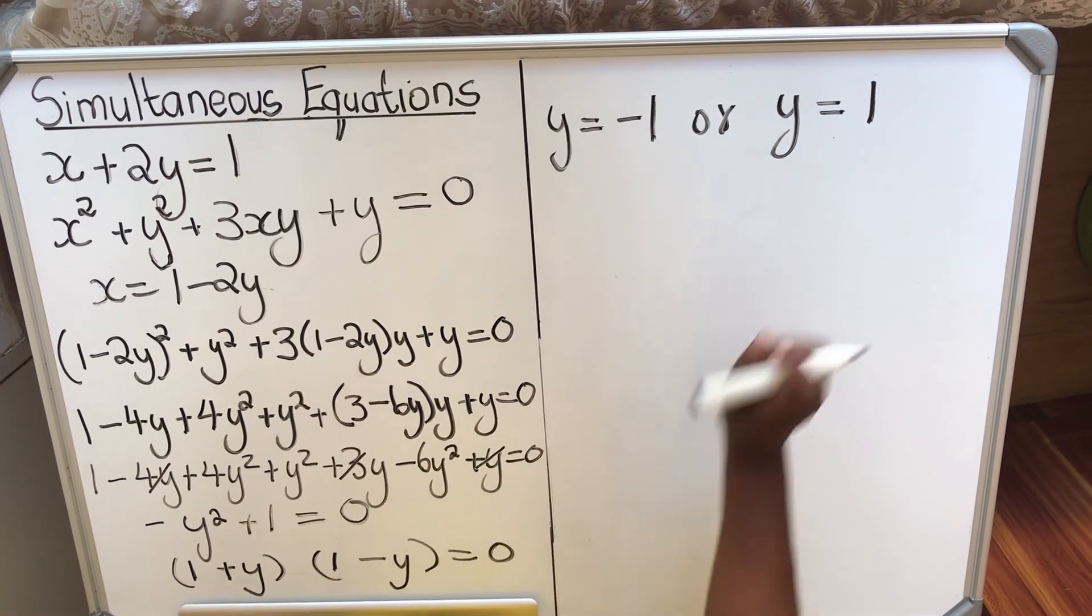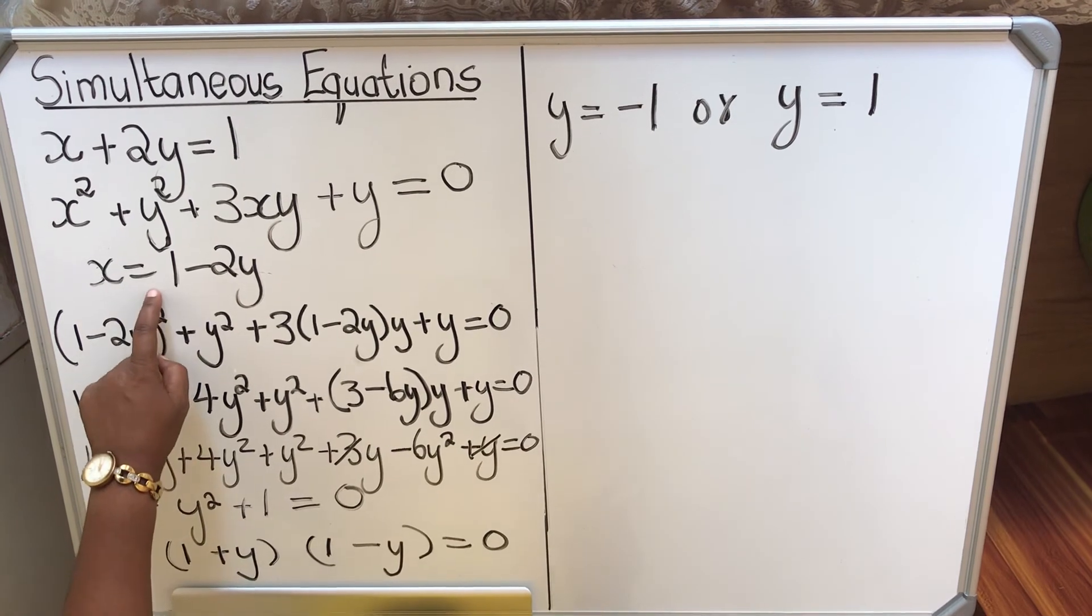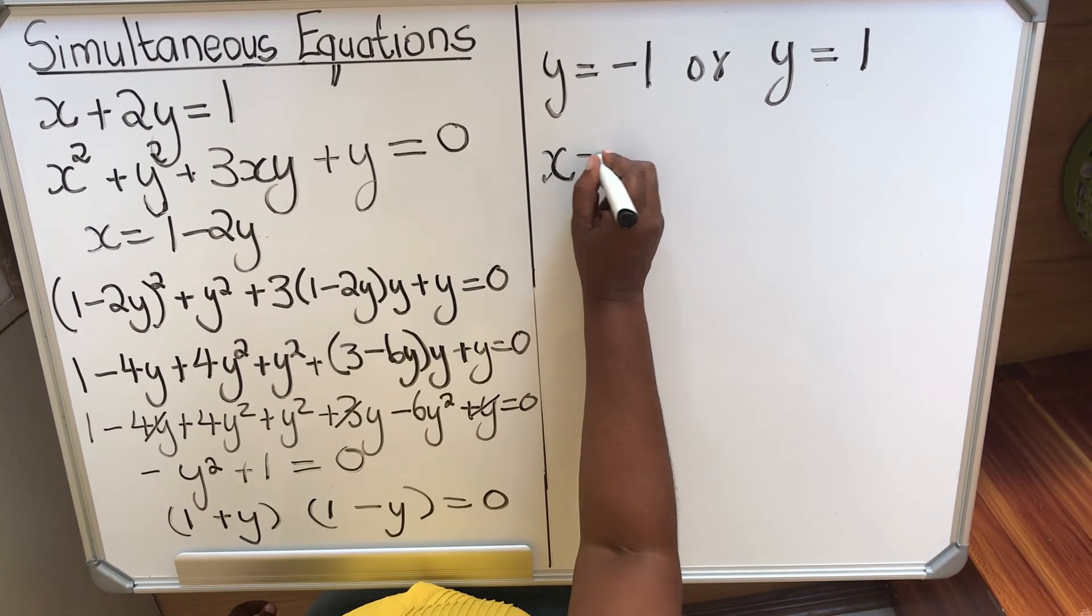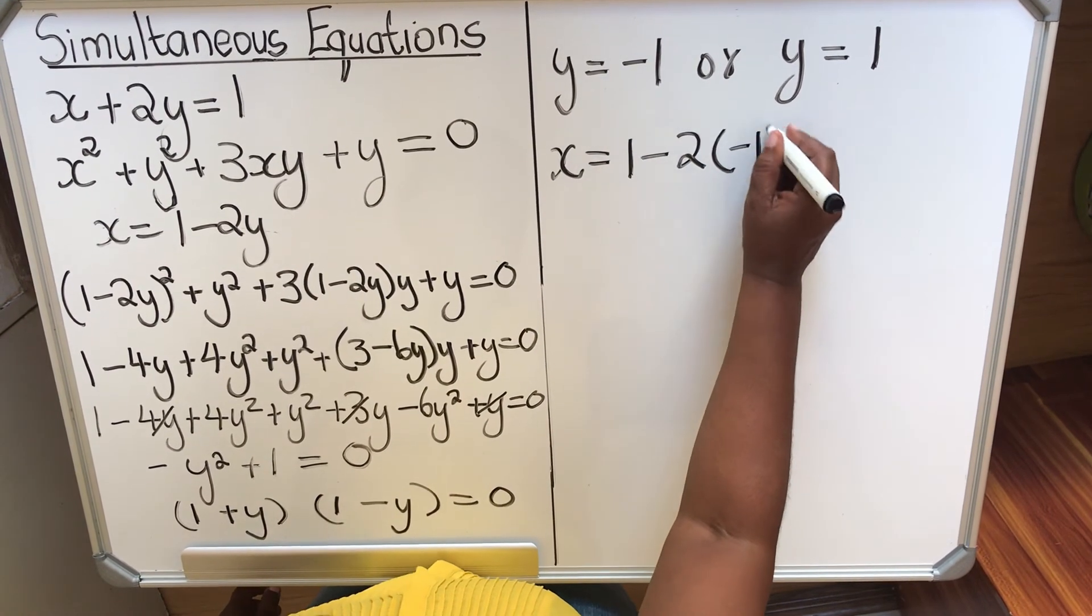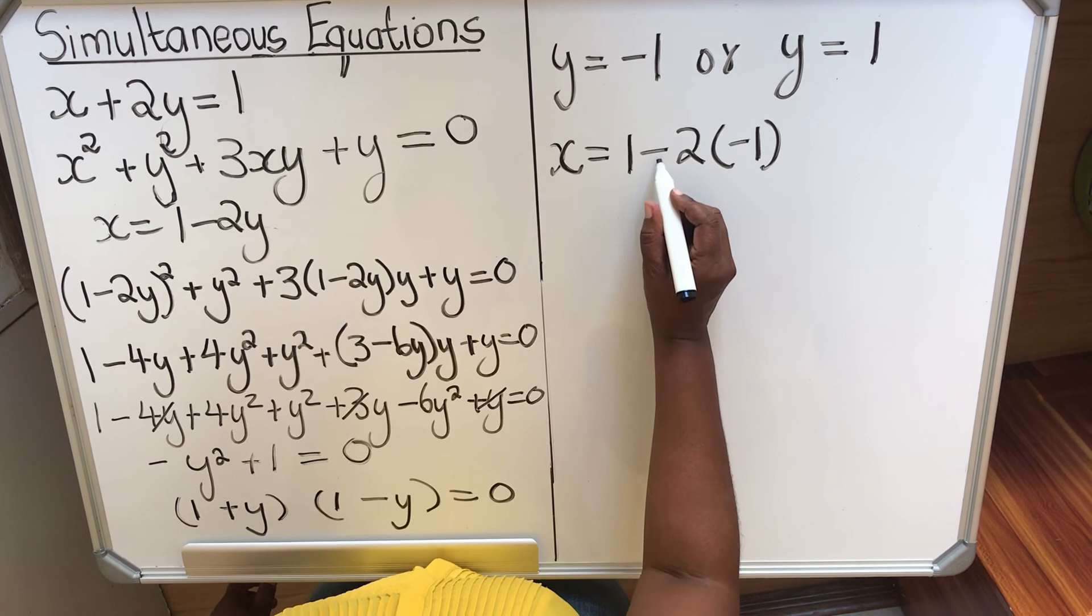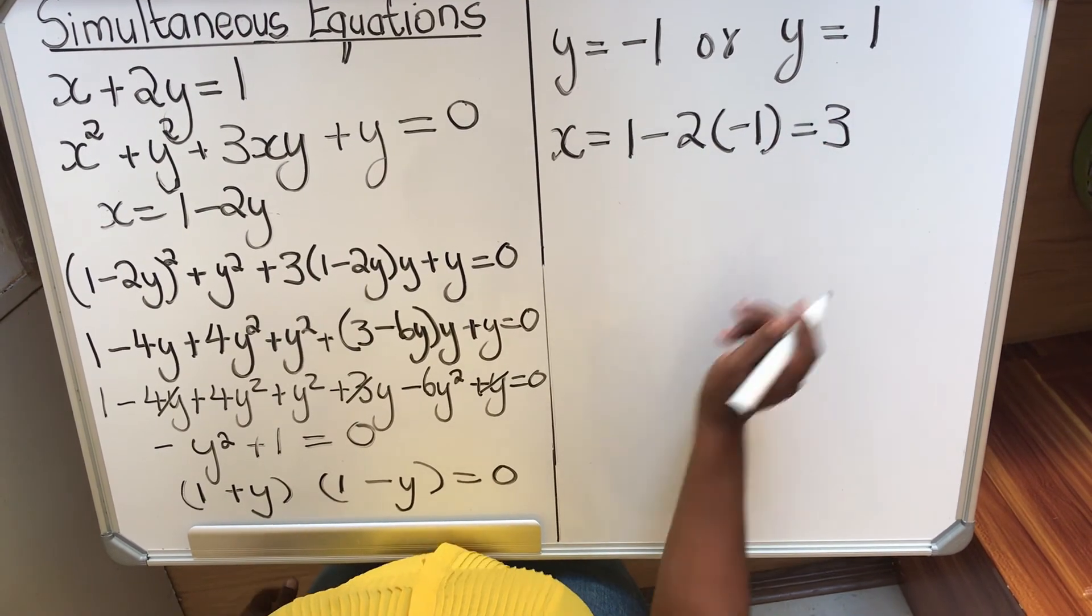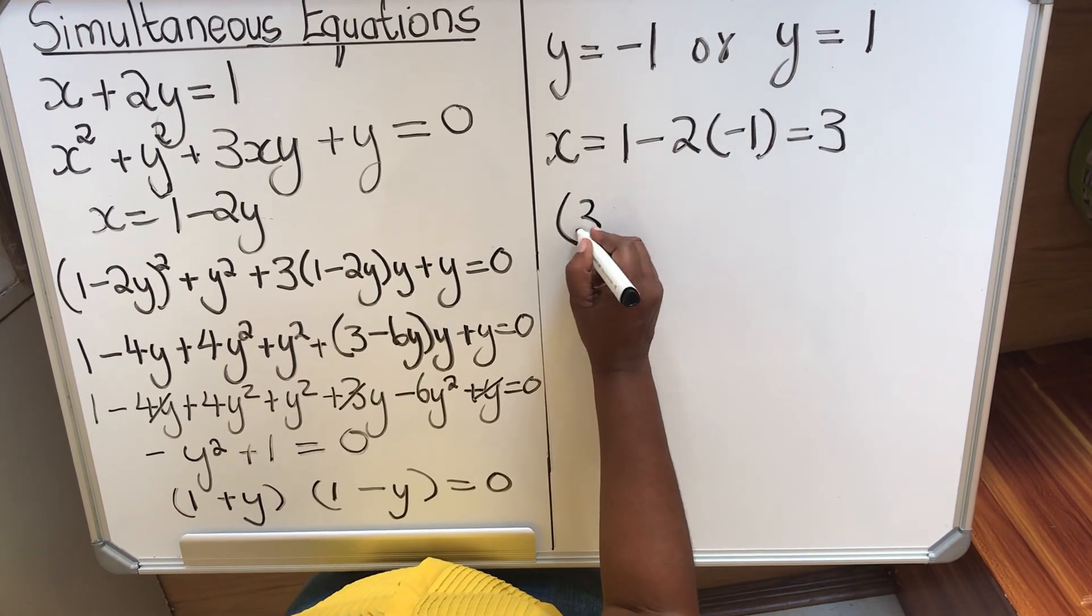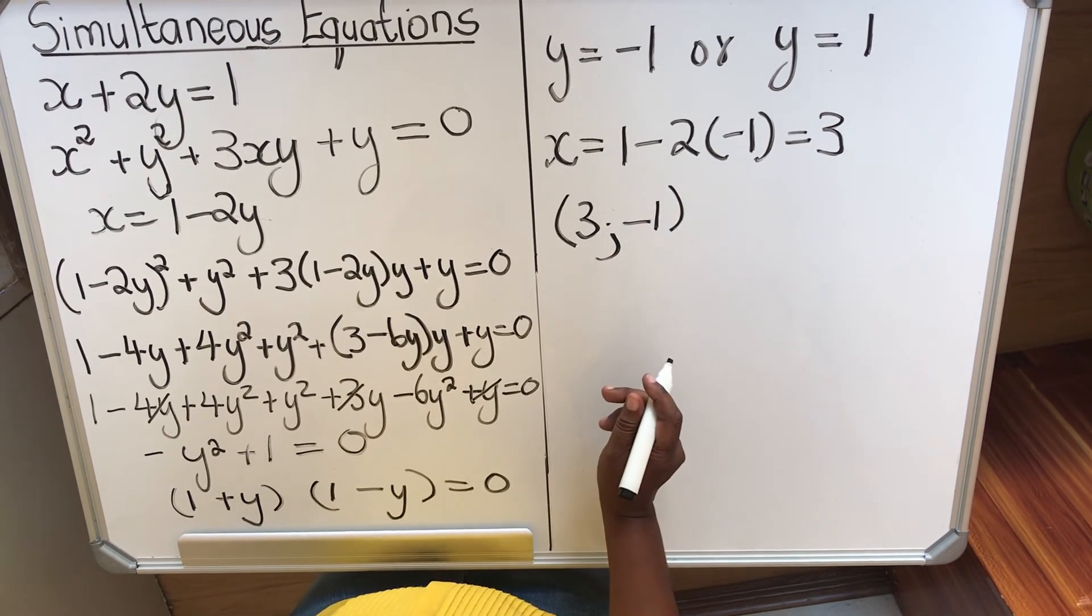Now I have y values. If I have y values, I need to go back to the equation and find the x values. x equals 1 minus 2 times my y is minus 1. So when I multiply minus minus, I get a plus 2. Then my answer is 3. So when I'm writing the coordinate, the first coordinate is x. x is 3 when y is minus 1.